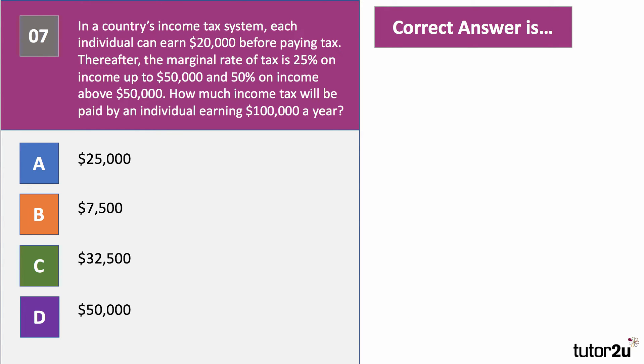Question seven is a calculation question — you might need a pen and paper. In a country's income tax system, each individual can earn $20,000 before paying tax. Thereafter the marginal rate of tax is 25% on income up to $50,000, and 50% on income above $50,000. How much income tax will be paid by an individual earning $100,000 a year? Have a go at question seven.